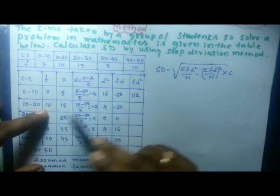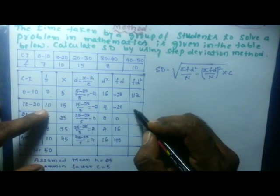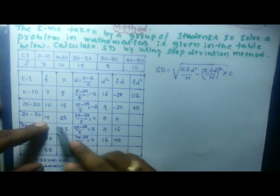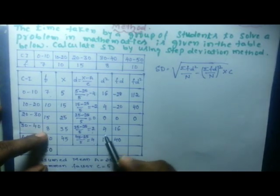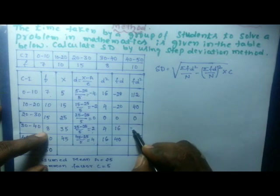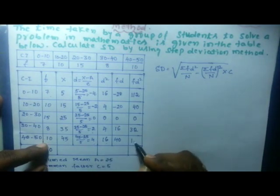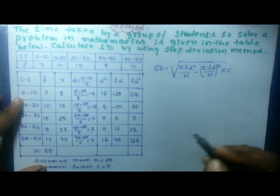Now compute the fd² column: 10×4=40 (for f=10, d²=4 row), 15×0=0, 8×4=32, 10×16=160. Complete all fd² values for the table.